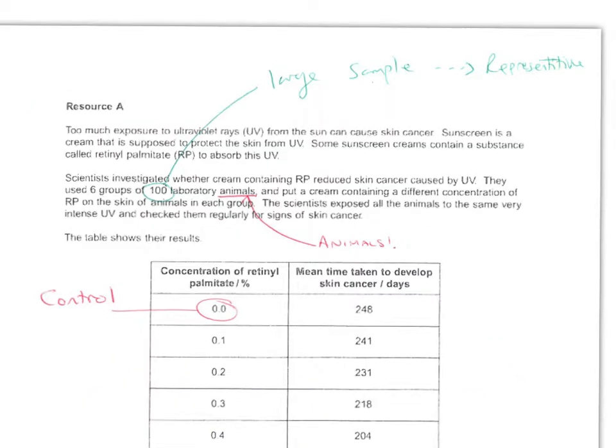One of the questions says why are mice good model organisms to use? It doesn't actually say mice here so it must have been in one of the questions directly that these were mice. Mice are mammals so they have a similar physiology to humans. They also don't take up much space.